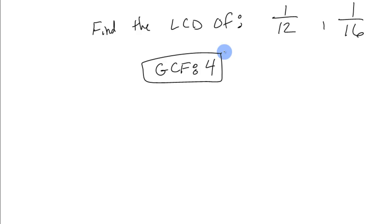If you need to see more on that, please watch a video on finding the greatest common factor. Now we take the greatest common factor and divide it out of either the 12 or the 16. Your choice. I choose the 12. So 12 divided by 4 equals 3.